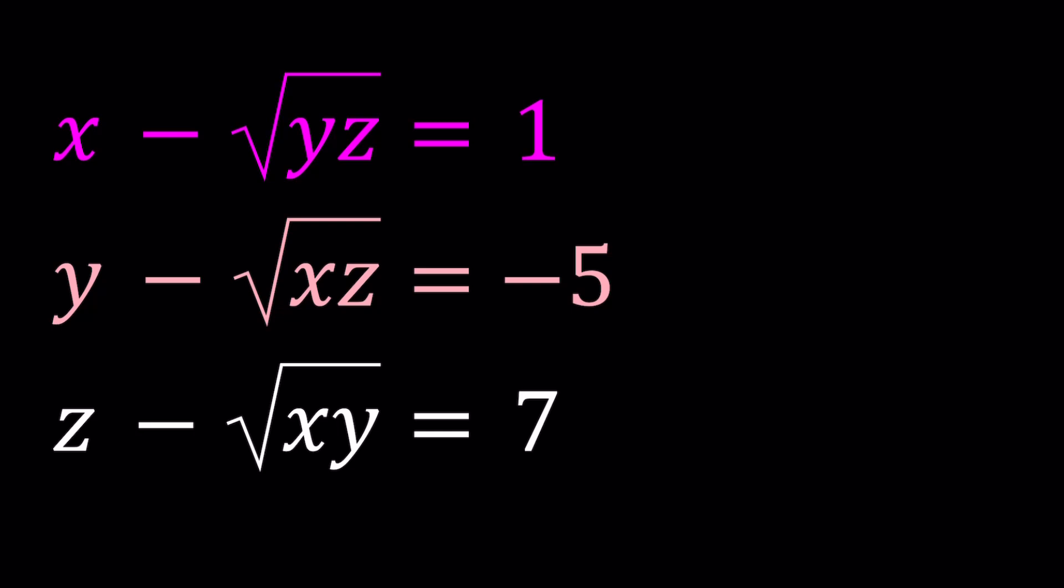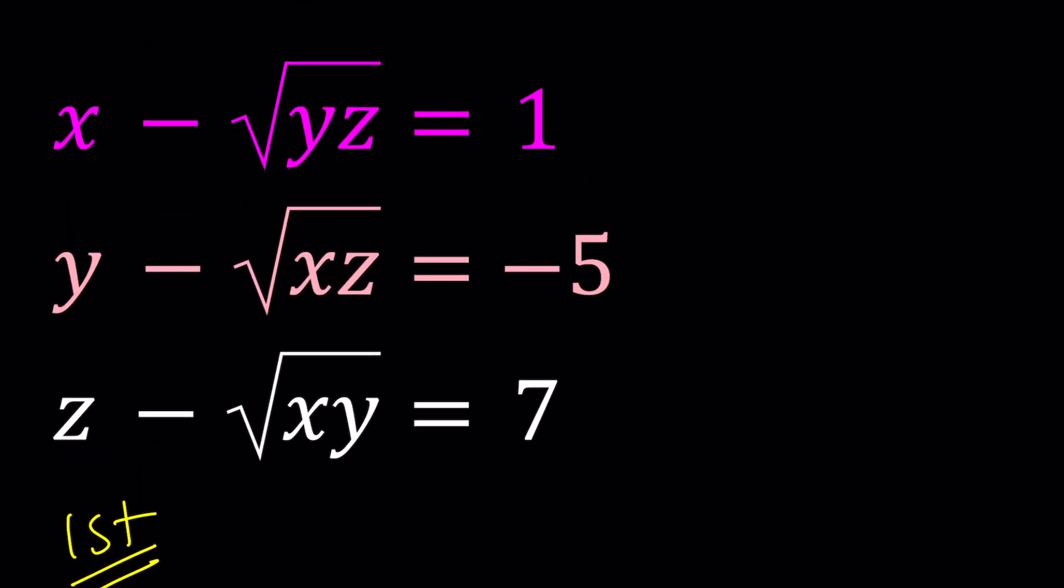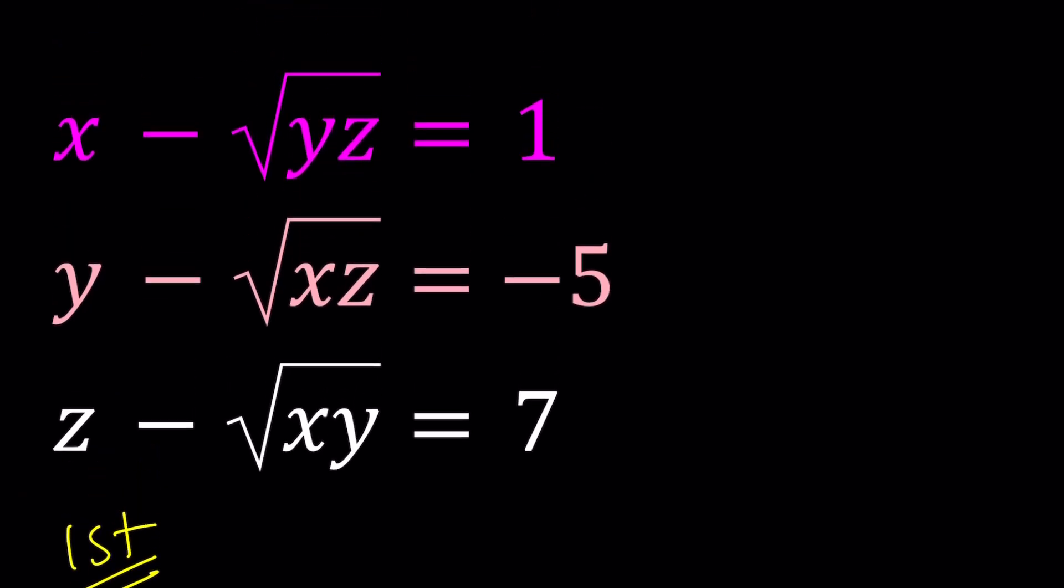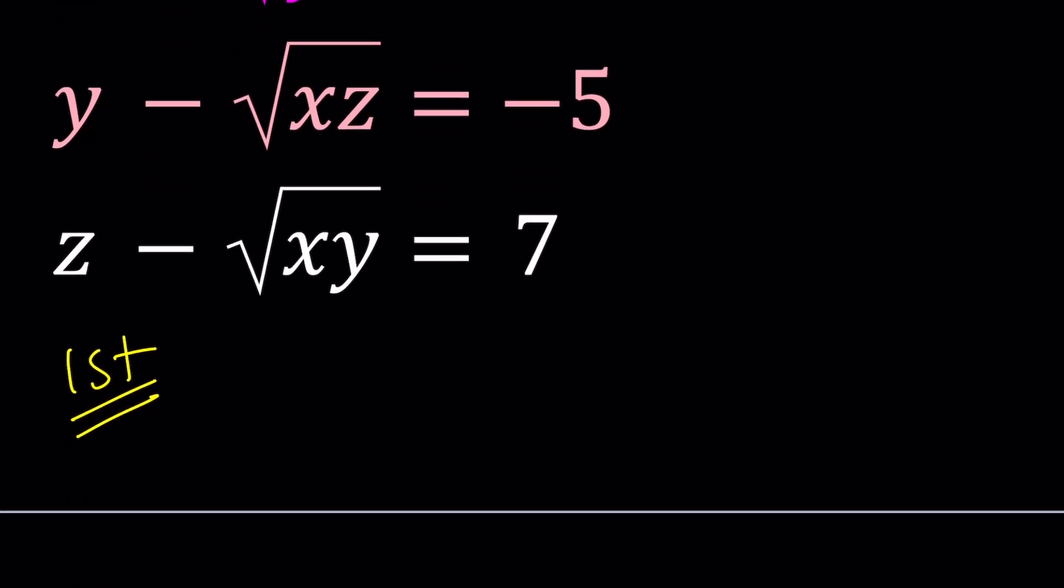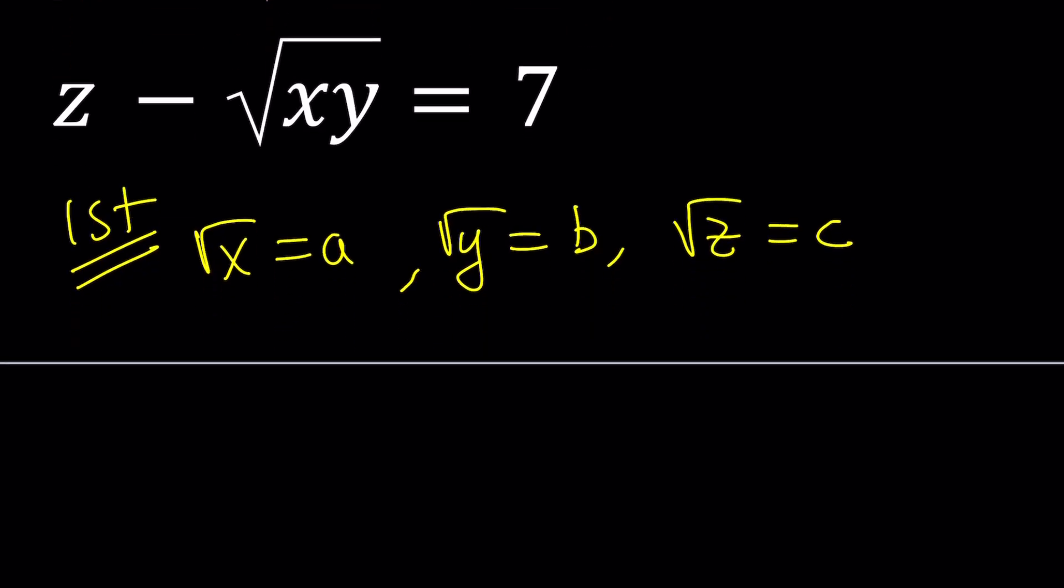We're looking for real solutions. I'll be presenting two solutions, two methods, even though the second method will be a little brief. Let's start with the first method. I'm going to change the variables. I don't like the radicals, so let's go ahead and get rid of them. We can set square root of x equal to a, square root of y equal to b, and square root of z equal to c. So from here, we get x equals a squared, y equals b squared, and z equals c squared.